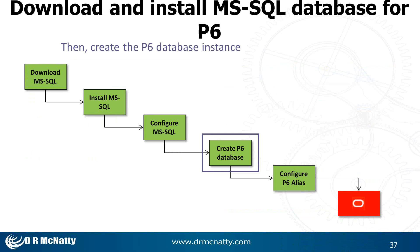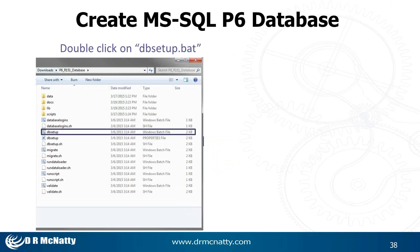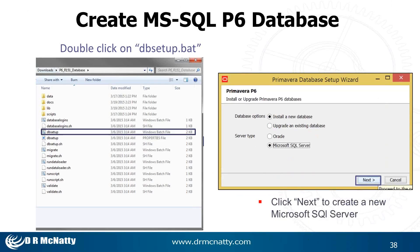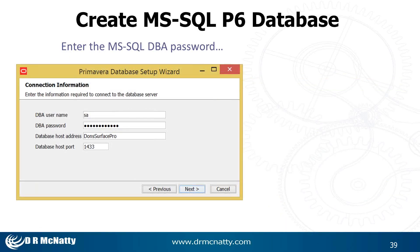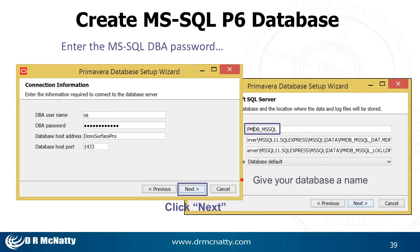Once that's done, the next step is to create a P6 database. Go to your P6 downloaded and unzipped files and find dbsetup.bat. We're going to install a new database and it's going to be a Microsoft SQL Server. This is where your password comes in handy from when you set up SQL Server. Enter SA for the system administrator username and then the DBA password. Your DBA host port is the one you enabled. Go ahead and click Next. This is where you set up your database name — in this case, PMDB_MSSQL. Click Next.